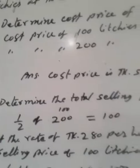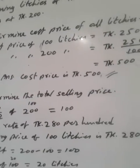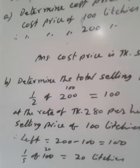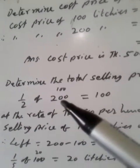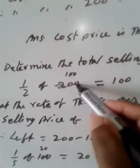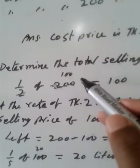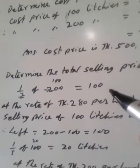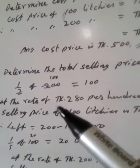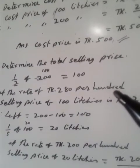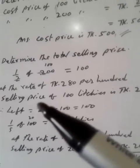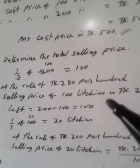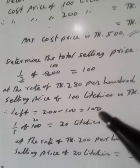Question B. Determine the total selling price. He sold one-half of 200. One-half of 200 equals 100. If we divide 200 by 2, we get 100. He sold 100 at the rate of Taka 280 per 100. So, selling price of 100 litchis is Taka 280. Left with him: 200 minus 100 equals 100.